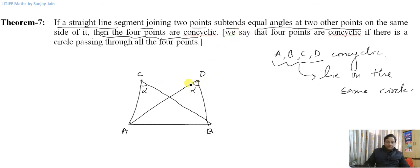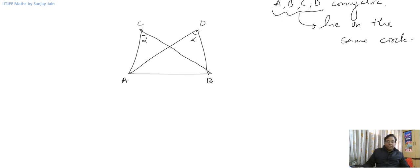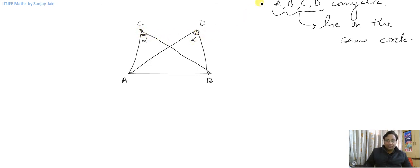Now how do we prove that? How do we prove that if this line segment AB subtends equal angles at two points on the same side of it, then these points are concyclic? Let us pretend for a moment that these are not concyclic — that these do not lie on the same circle. Let us draw this circle.